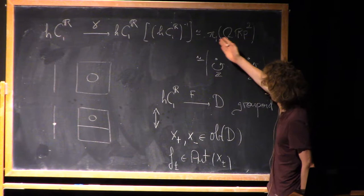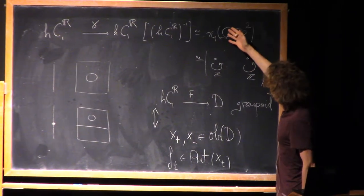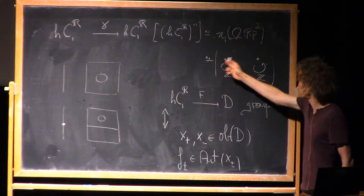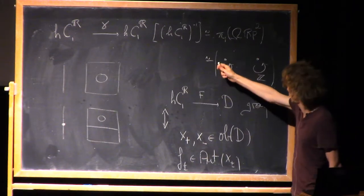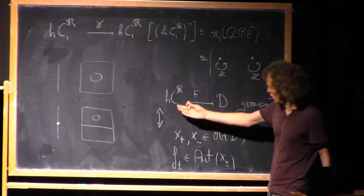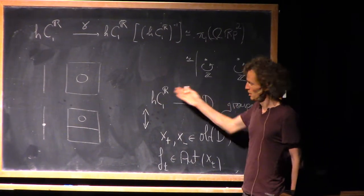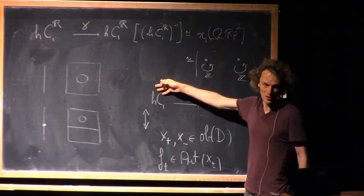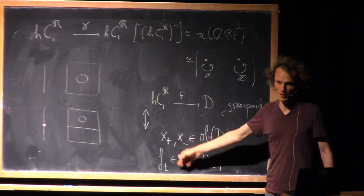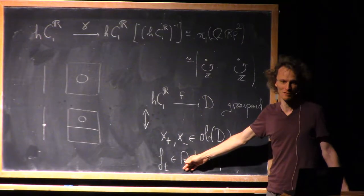The object is the fundamental groupoid of loops of RP^2. It's easy to see that it's equivalent to a two-object groupoid, where both automorphism groups are Z. So that tells you that functions out of this category are uniquely determined up to isomorphism by specifying two objects and one automorphism of each object, satisfying nothing.